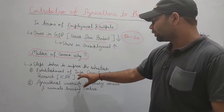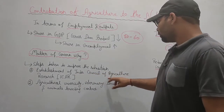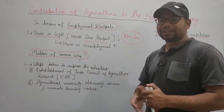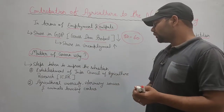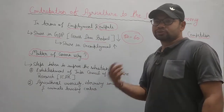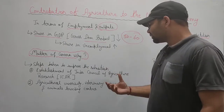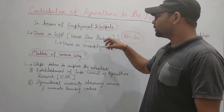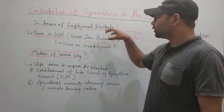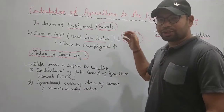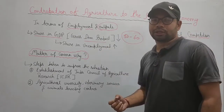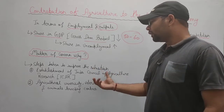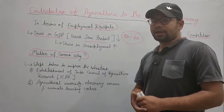The first step the government took was establishing ICAR — the Indian Council of Agricultural Research. This institution was set up to research Indian agriculture: to understand why GDP share of agriculture has been continuously decreasing and why unemployment is growing. All these issues are discussed and analyzed by ICAR.